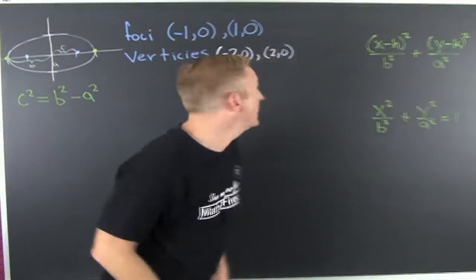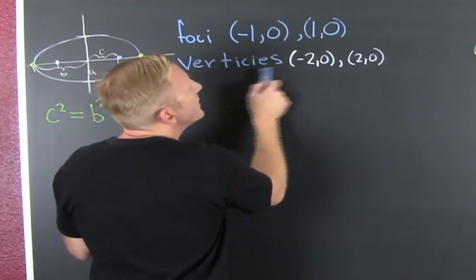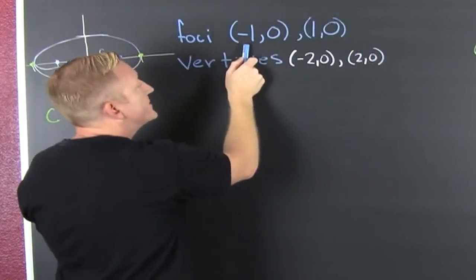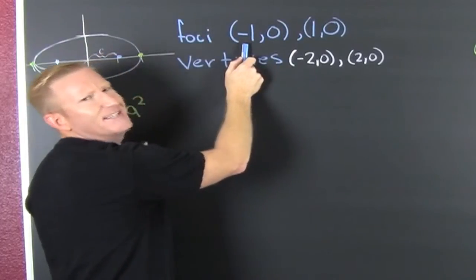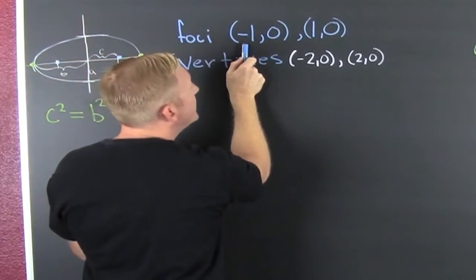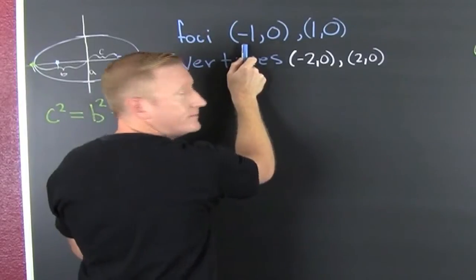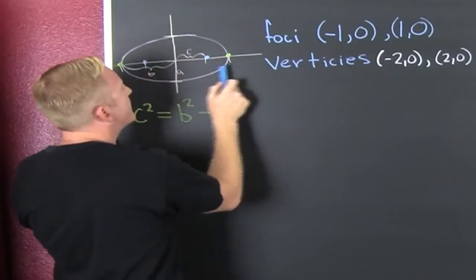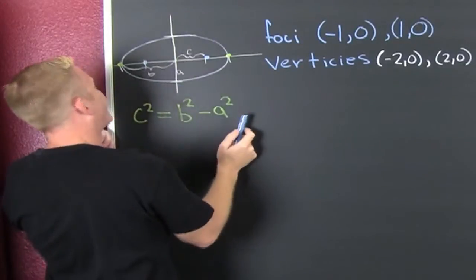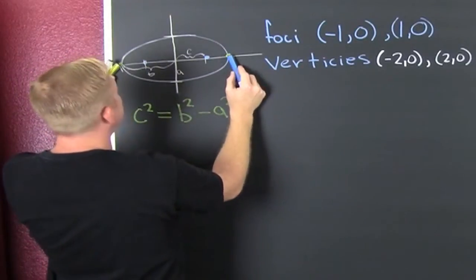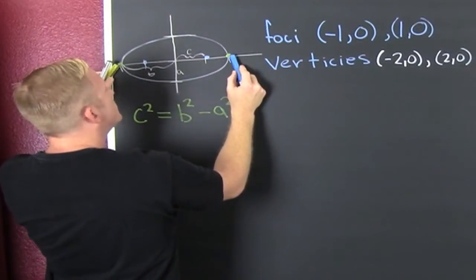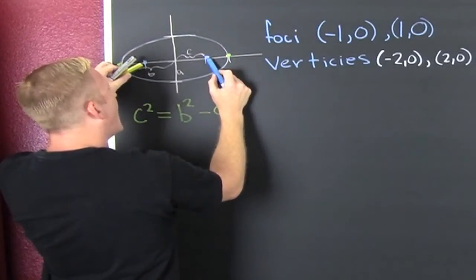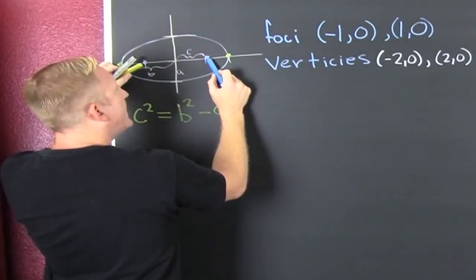Here we see our vertices are going to be minus 2 and 2. And my foci are going to lie at his eye — minus 1 and 1. Those are our points. Here, if I drew Stewie's freaking head, we'd see our vertices are at plus and minus 2, and our foci lie where his eyes lie, at 1 and minus 1.